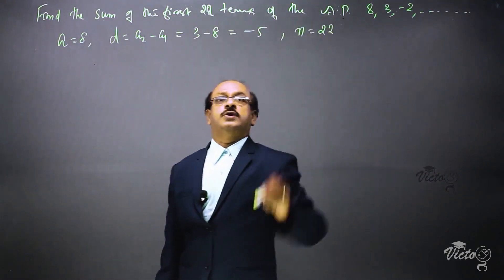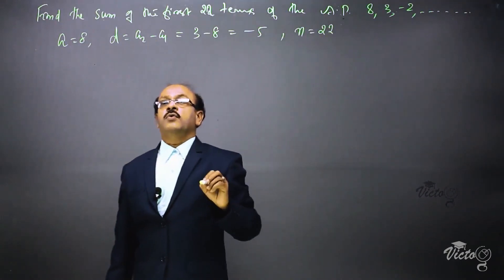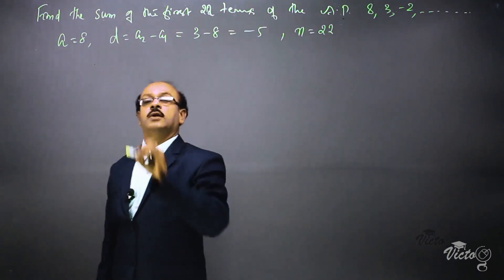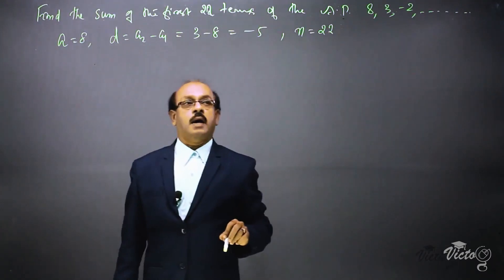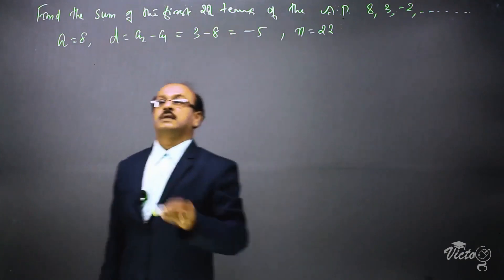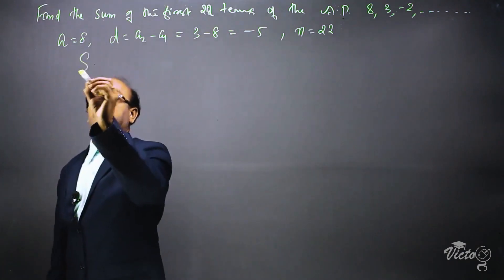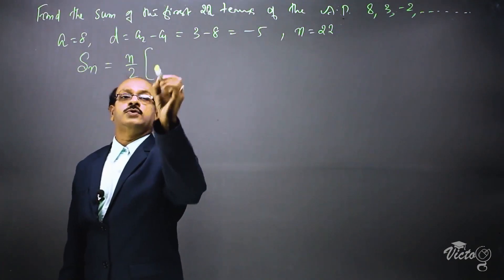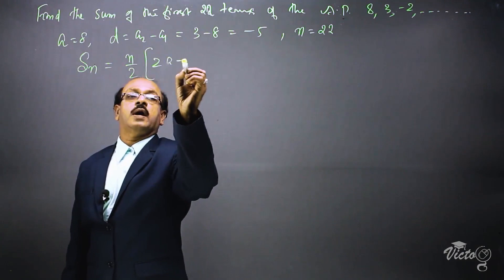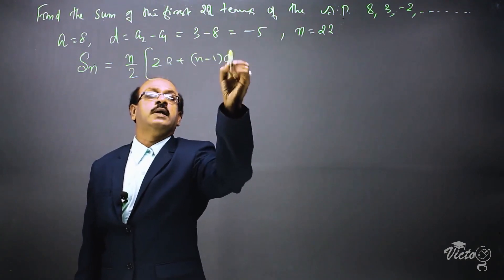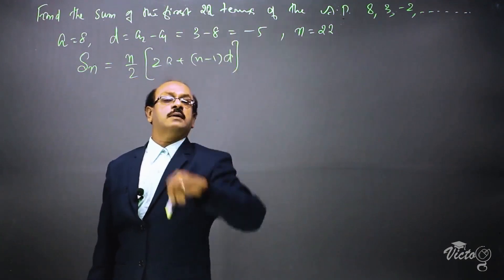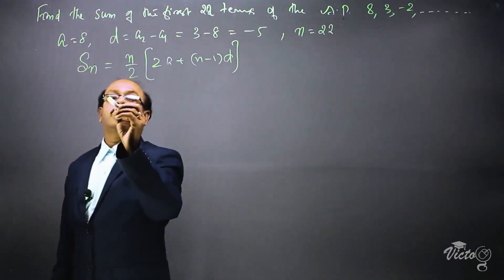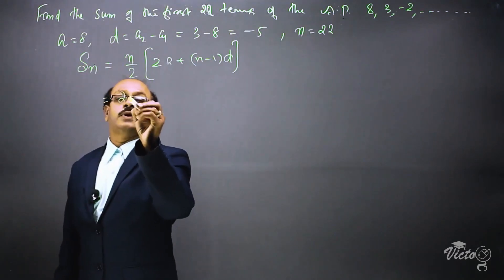Since we know n, common difference D, and first term a, we select the equation: sum of first n terms, Sn, equals n by 2 into 2a plus n minus 1 into d. We substitute the values with n equal to 22.